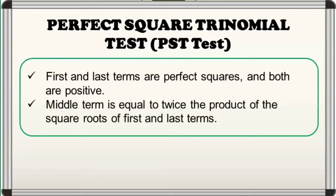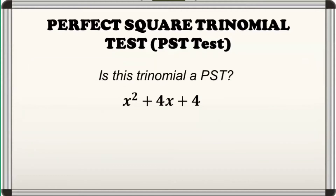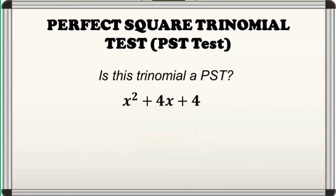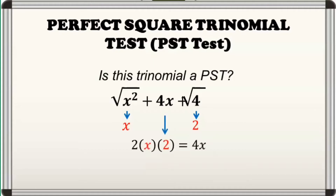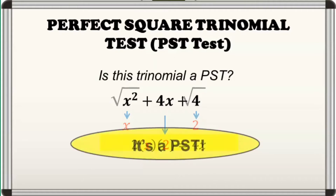We'll have some examples for us to understand the PST test. Is this trinomial a PST? As you can observe, the first and the last terms are perfect squares since x squared is equal to the square of x, and 4 is equal to the square of 2, and they are both positive. The first requirement is satisfied, so we'll proceed to the second requirement. Taking the square roots of the first and last terms, we have x and 2 respectively. Taking twice the product of these square roots, we have 2 times x times 2 equal to 4x. We have satisfied the second requirement since the resulting product is equal to the middle term, regardless of its sign. Kaya, masasabi natin na ang given ay isang PST.